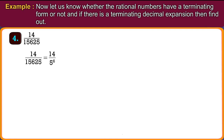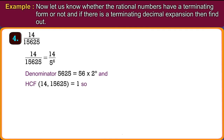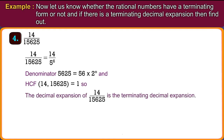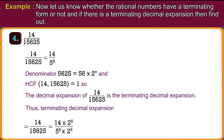Number 4: 14 upon 15,625. The denominator 15,625 equals 5 raised to 6, which equals 5 raised to 6 into 2 raised to 0. The highest common factor of 14 and 15,625 is 1. So the decimal expansion of 14 upon 15,625 is the terminating decimal expansion. Thus, 14 upon 15,625 equals 14 into 2 raised to 6 upon 5 raised to 6 into 2 raised to 6, equals 896 upon 10,000,000, equals 0.00896.